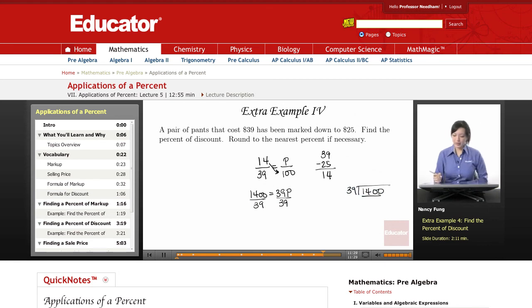39 will go into 140, let's see, about 3 times. $39 times 3 is $117.